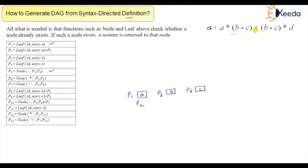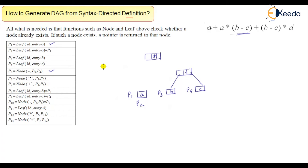Now we will create a node with the minus operator for B minus C, since B minus C will be evaluated first. There will be a node with sign minus, and it will refer to pointers p3 and p4. This minus node is denoted as p5.